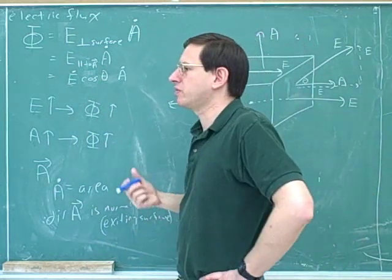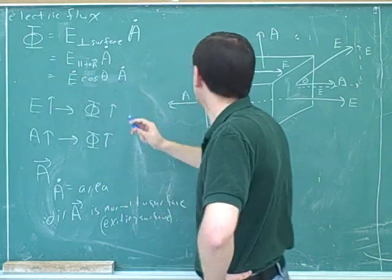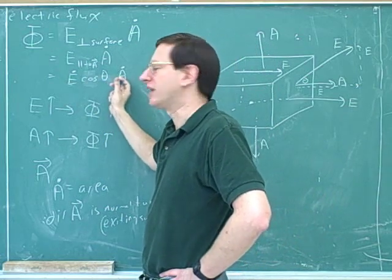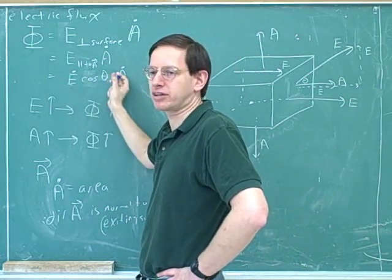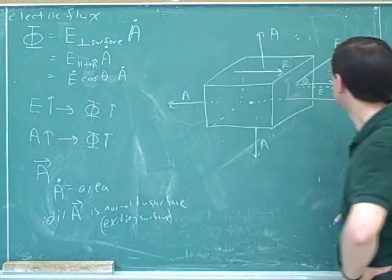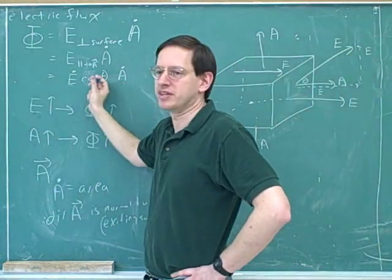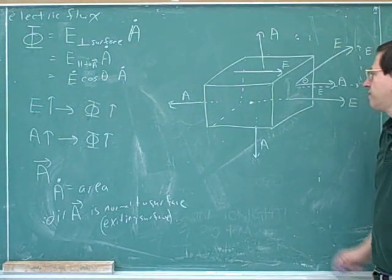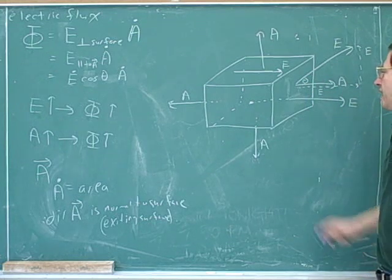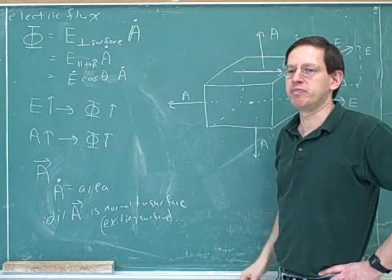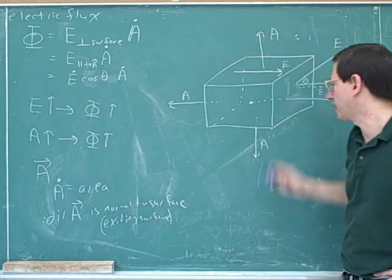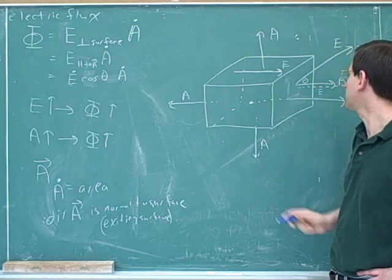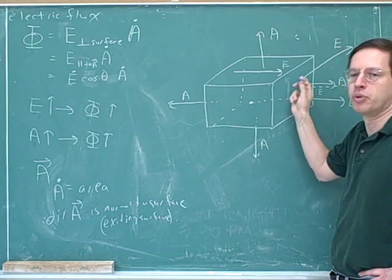The key thing in physics is usually the angle. Theta is the angle between the E vector and the A vector — that's important to have in your notes. We could have focused on the angle that the electric field makes with the surface, which might feel more intuitive, but the conventional way in physics is to focus on the angle that the field makes with the normal to the surface.